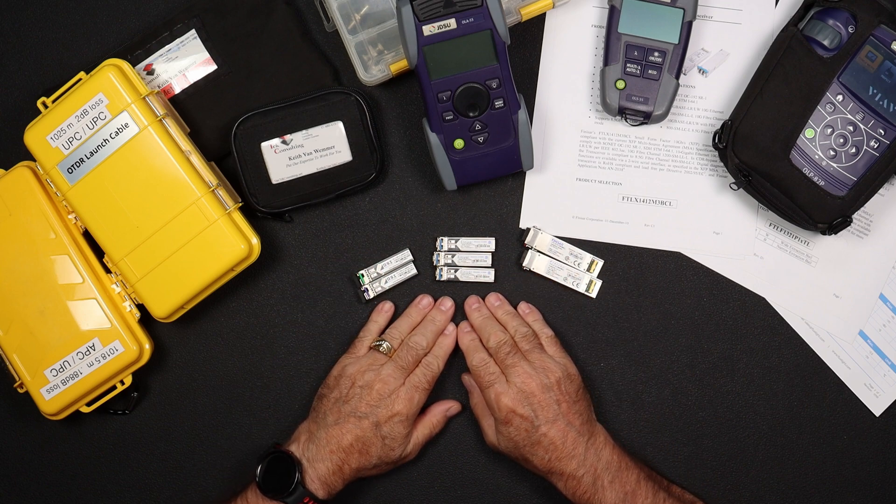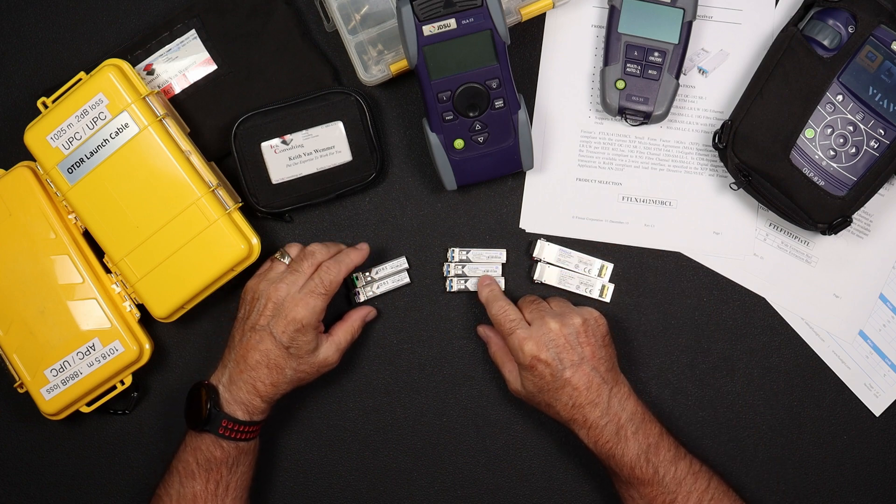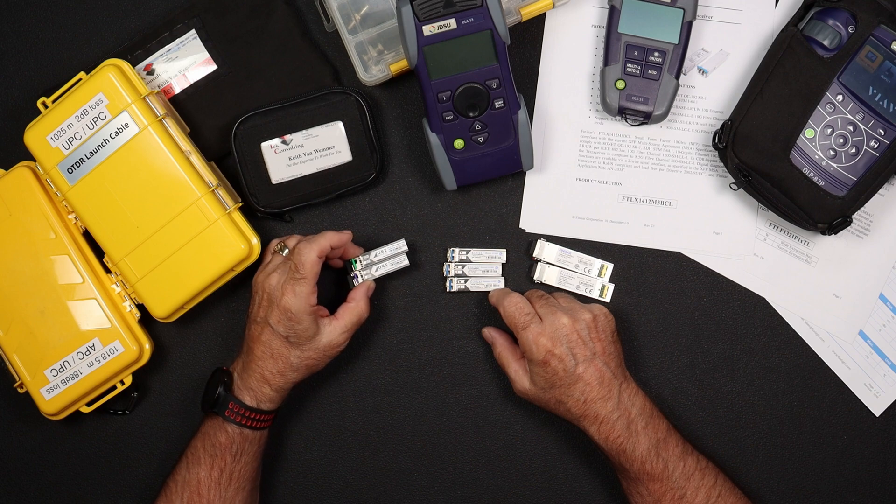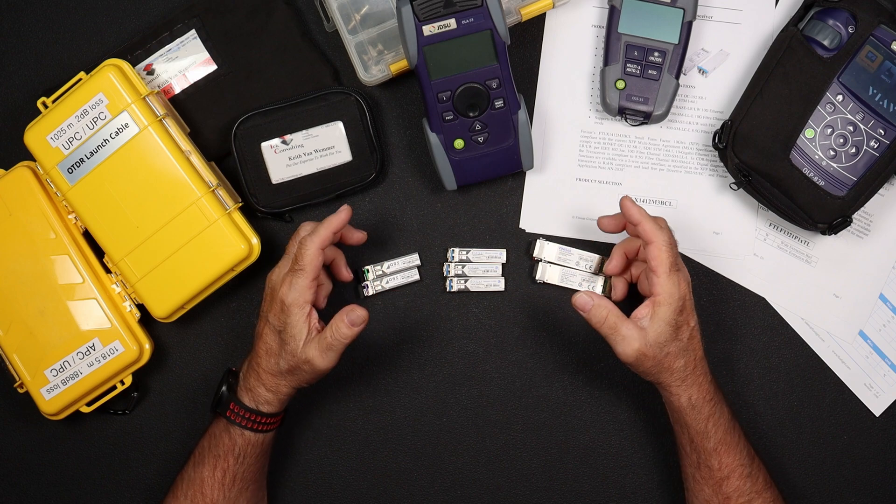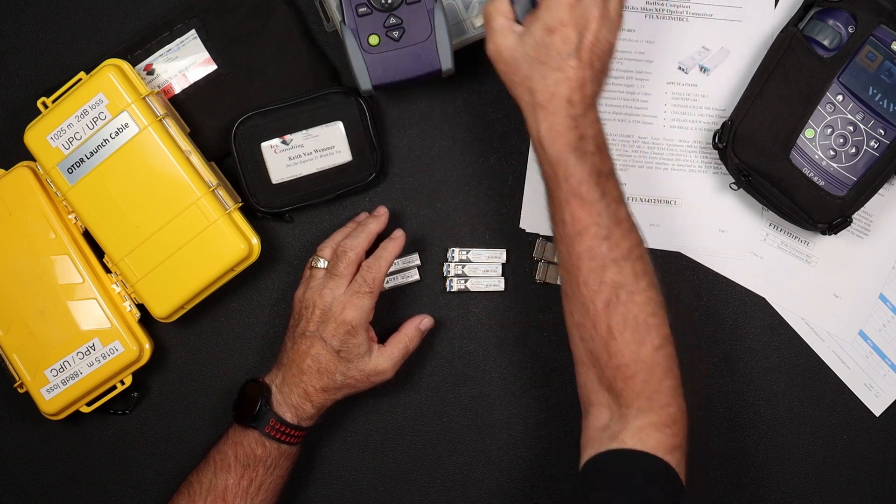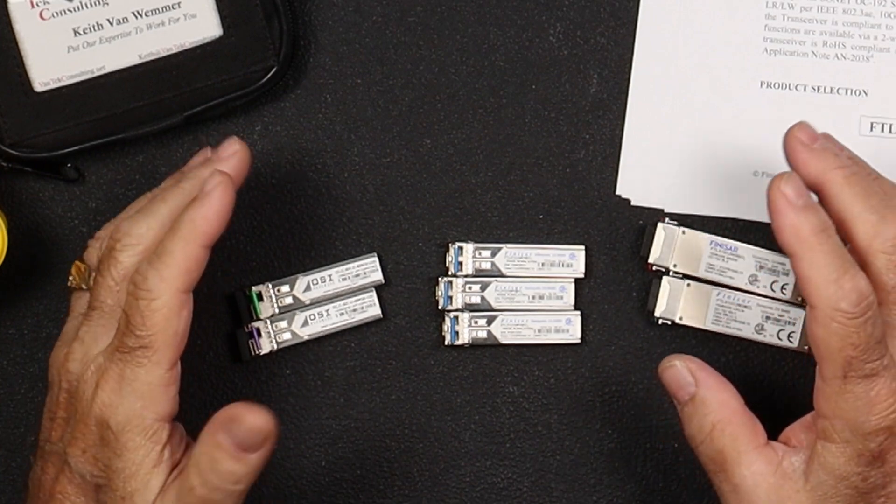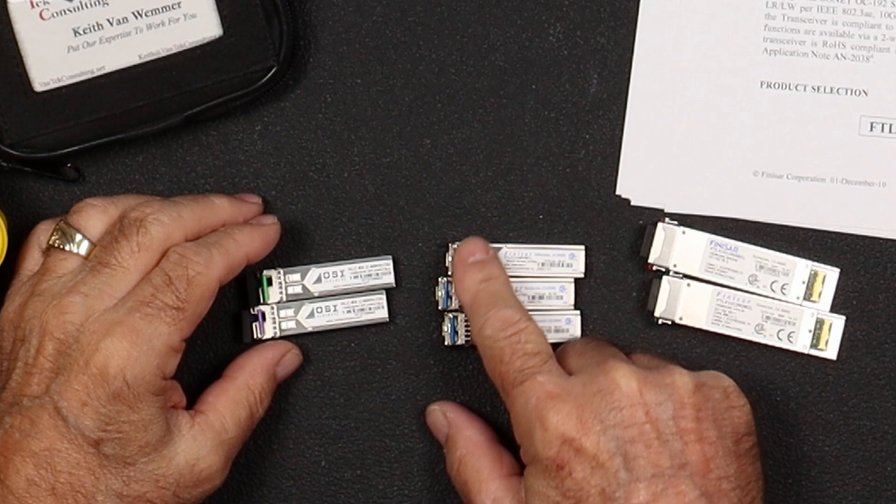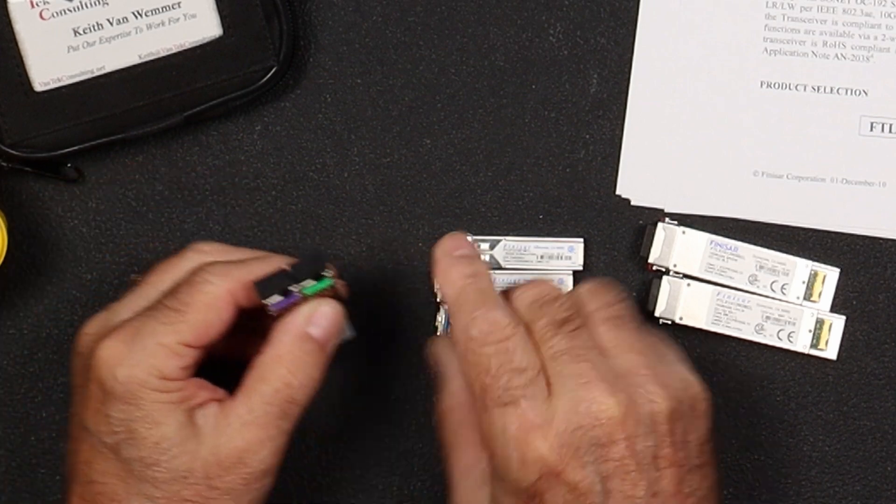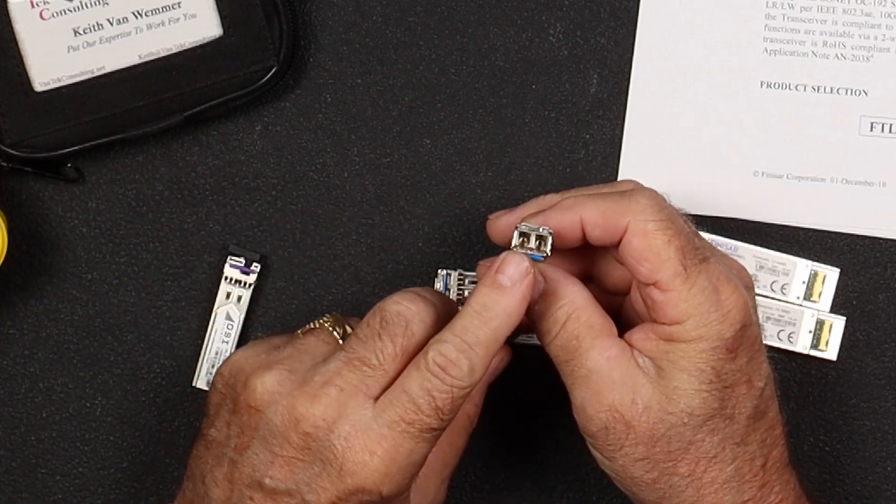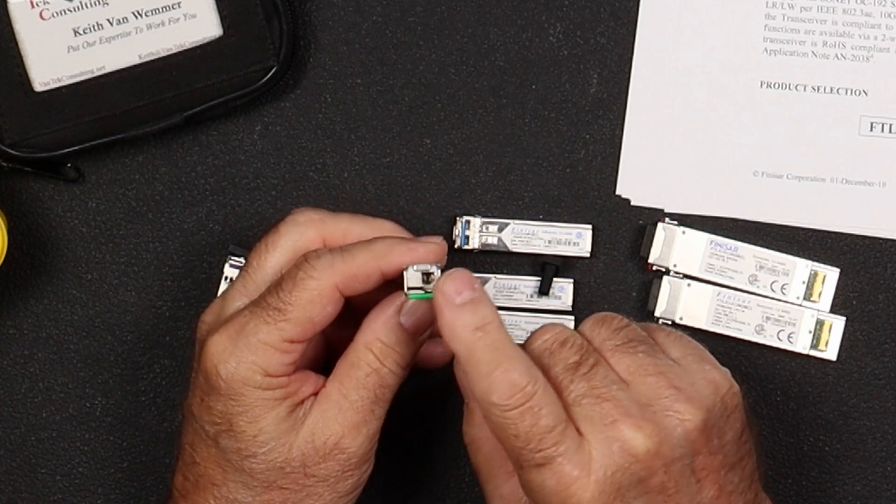What I got in front of me here is just some various little optics. So these are XFPs, these are SFPs, and these are bidirectional or bidie SFPs. These guys plug into the equipment, and they're the lasers. And so each one of these, as we get down the road here, each one of these has specifications and what their capabilities are.